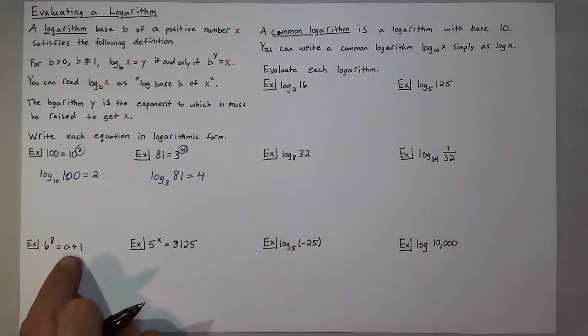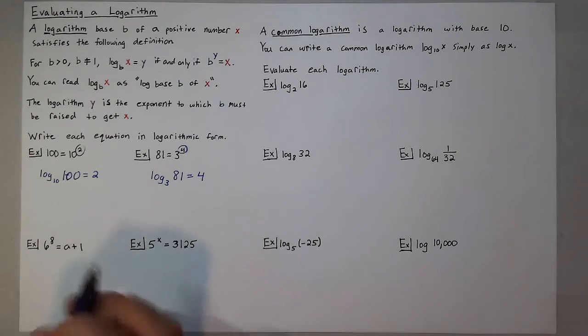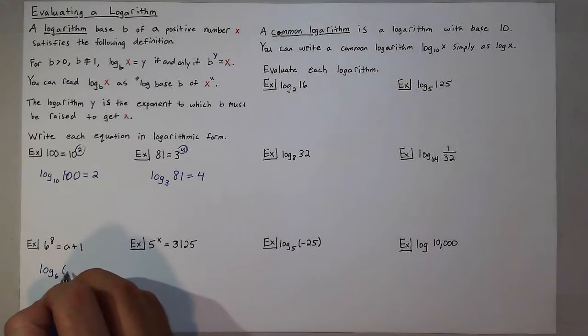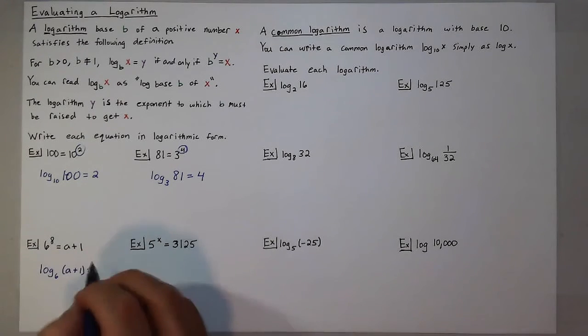Now, if you happen to have a variable in there, it still all works the same. The logarithm will be equal to that exponent. So you'll have log base 6 of a plus 1 is equal to 8.